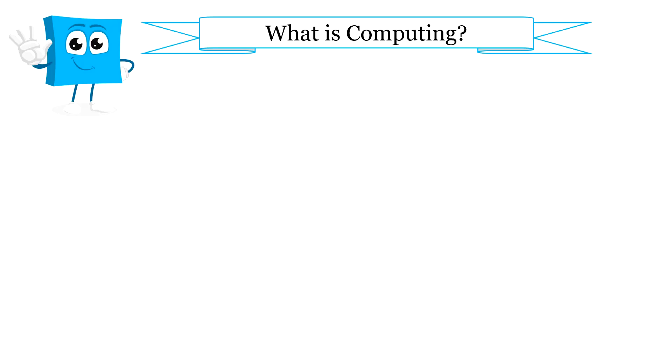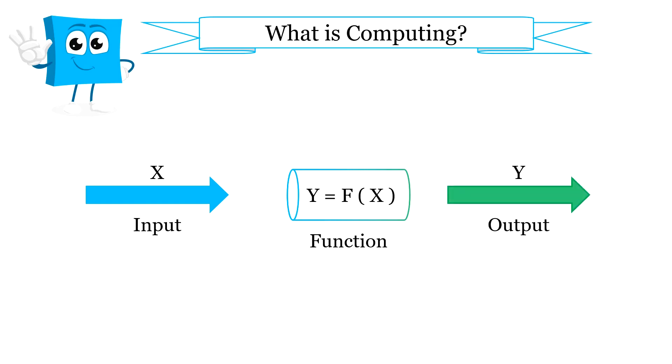Before going into what is soft computing, let us talk about the basic term computing. Basically computing is a process that takes an input, uses a formal method algorithm or a mapping function to process it, and delivers an output. This formal method or function has control actions that convert a particular input to a particular output.